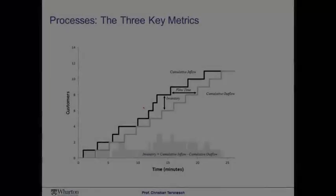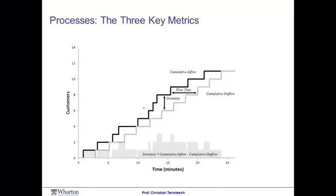To see the intuition behind Little's Law, let's take another look at some of the analysis we've done in an earlier session on the Subway restaurant. Remember how we were sitting in front of the Subway restaurant, keeping track of the inflow of customers as well as the outflow. We refer to the vertical difference between these graphs as the inventory — the number of customers in the system — and the horizontal difference as the flow time, how long a specific customer stayed in the restaurant.